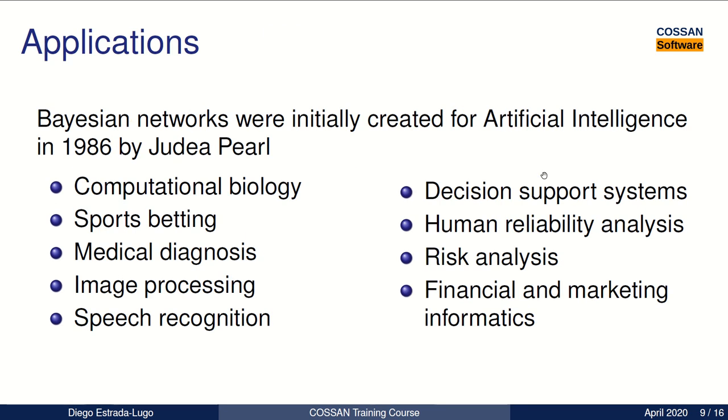Even though Bayesian networks were created for artificial intelligence in 1986 by Judea Pearl, now it has many varieties of applications that can go from computational biology to speech recognition, to decision support systems, to risk analysis or financial and marketing informatics.